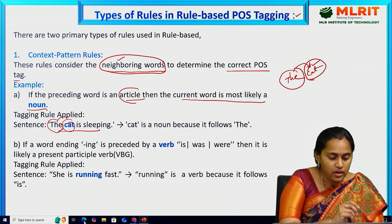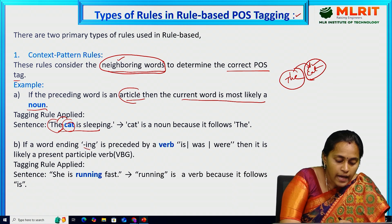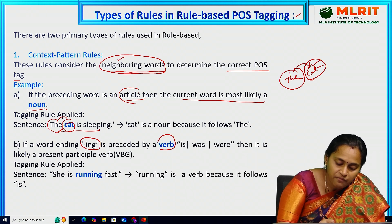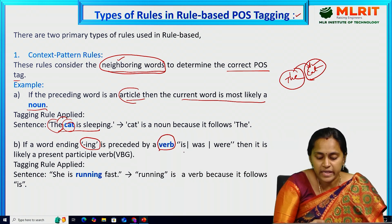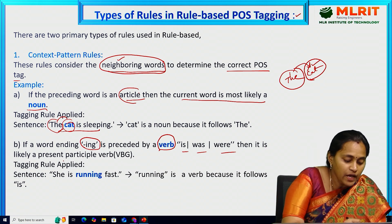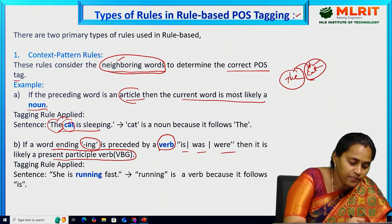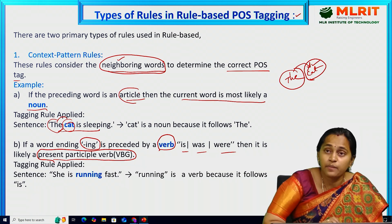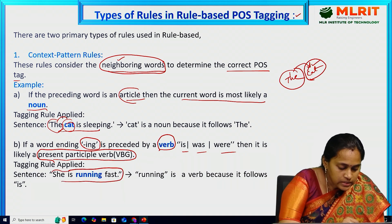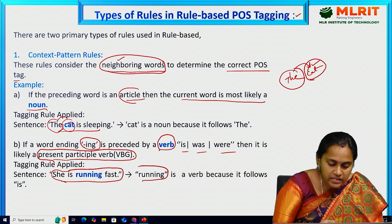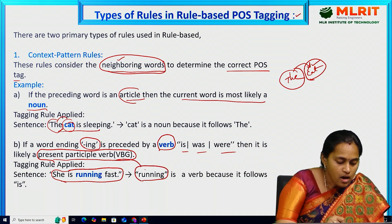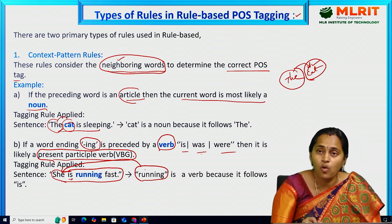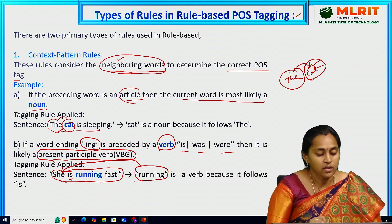Let's see the second example of context pattern rules. If a word ending with 'ing' — like 'playing' or 'running' — is preceded by a verb such as 'is', 'was', or 'were', then it is likely a present participle verb. For example: 'She is running fast.' Here 'running' is a verb compulsorily followed by 'is'. This is the meaning of the 'ing' rule.